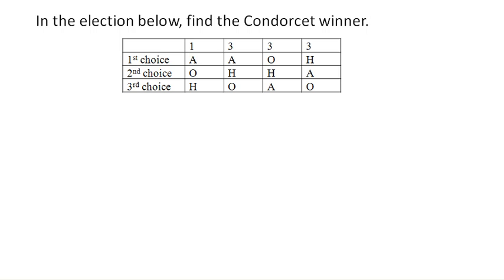Condorcet looked at voting, and we're going to look at preferences if there was only two choices. So let's compare A versus O. So if it was A versus O, these people would prefer A. These people would prefer A. These people would prefer O. These people would prefer A. Now remember, we're ignoring H as an option.